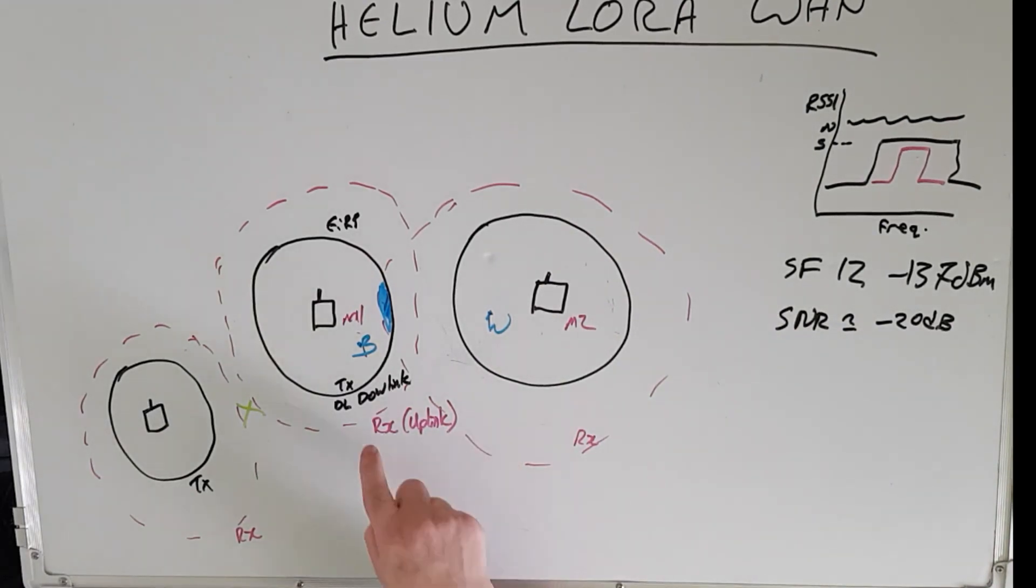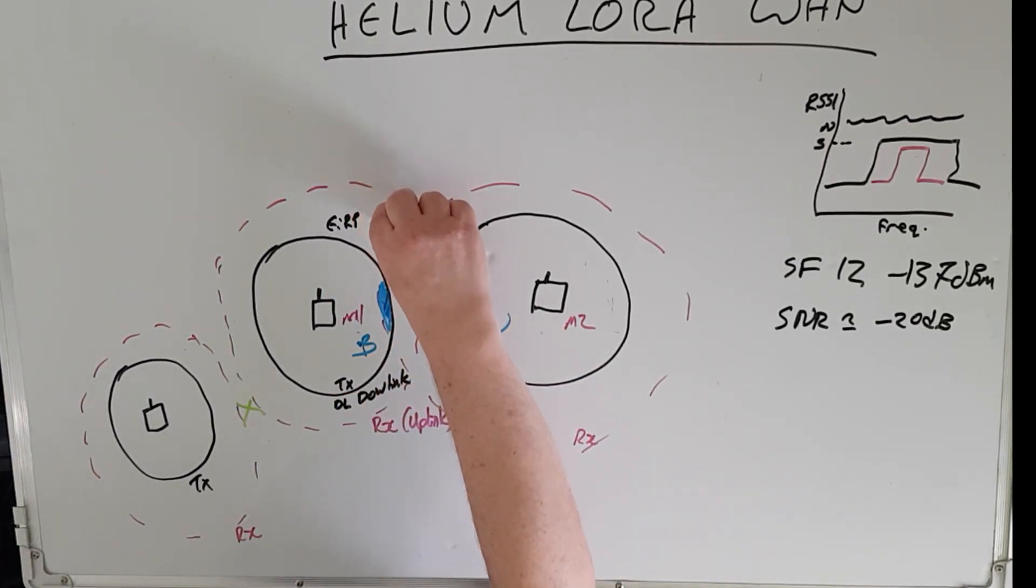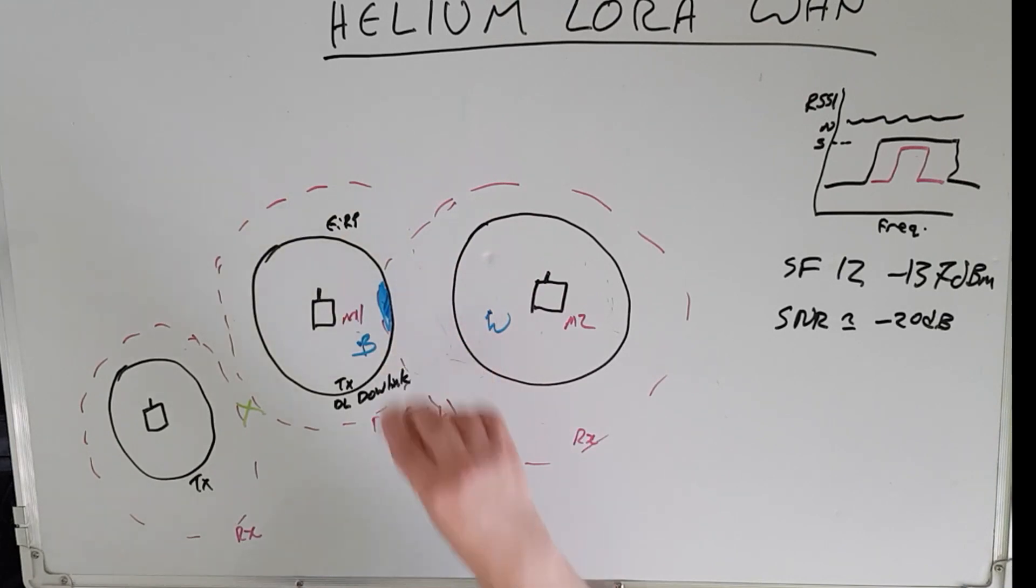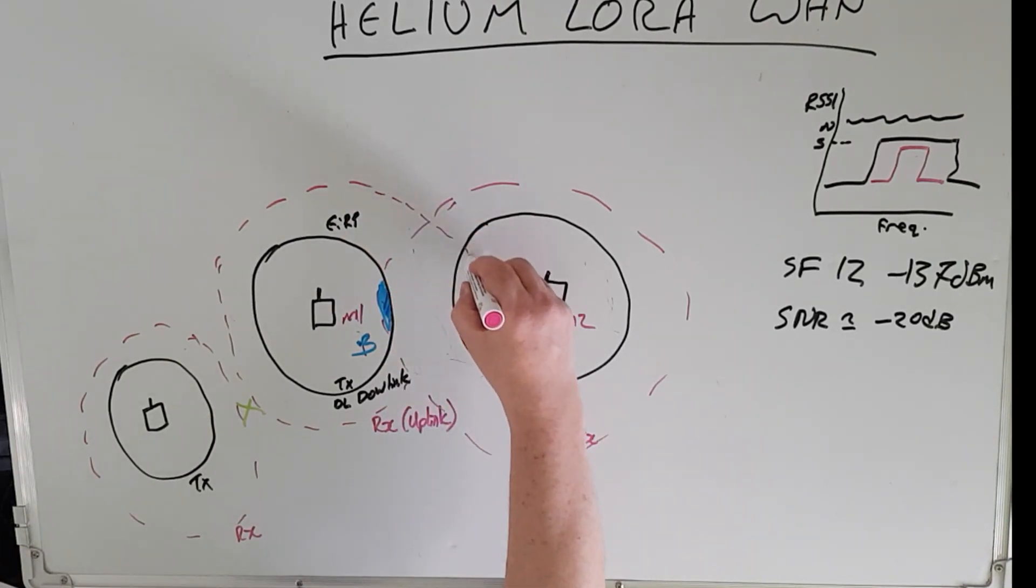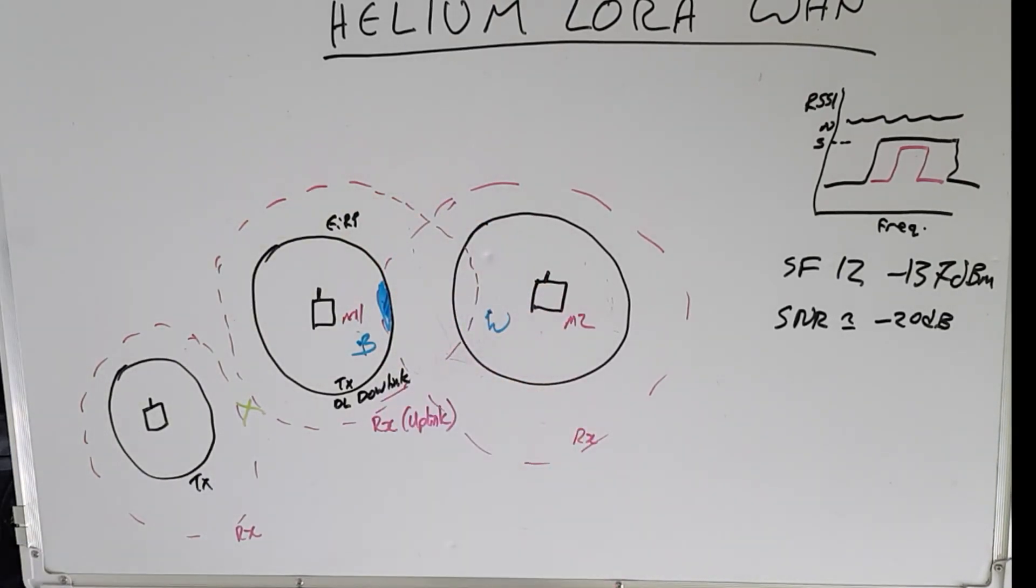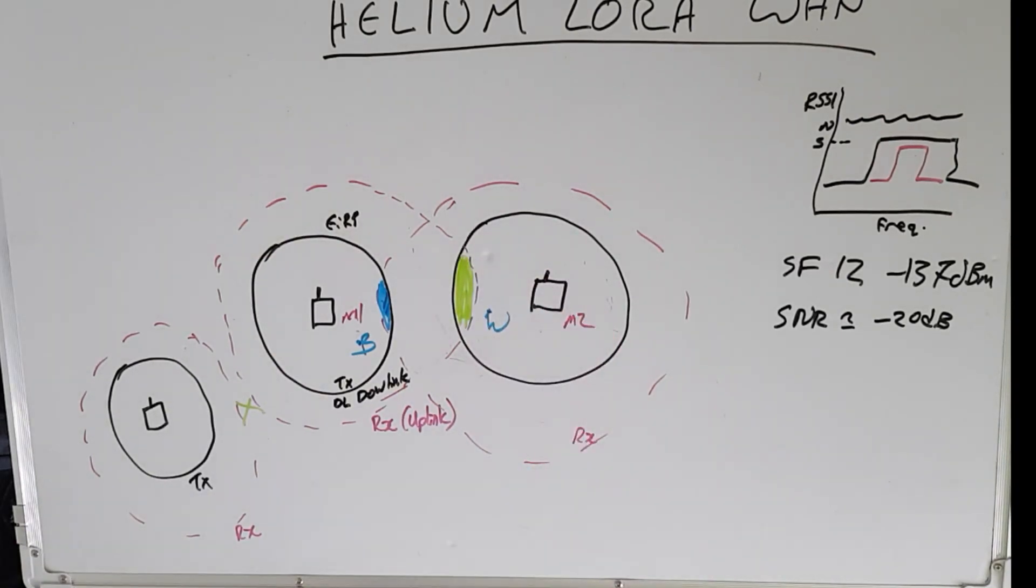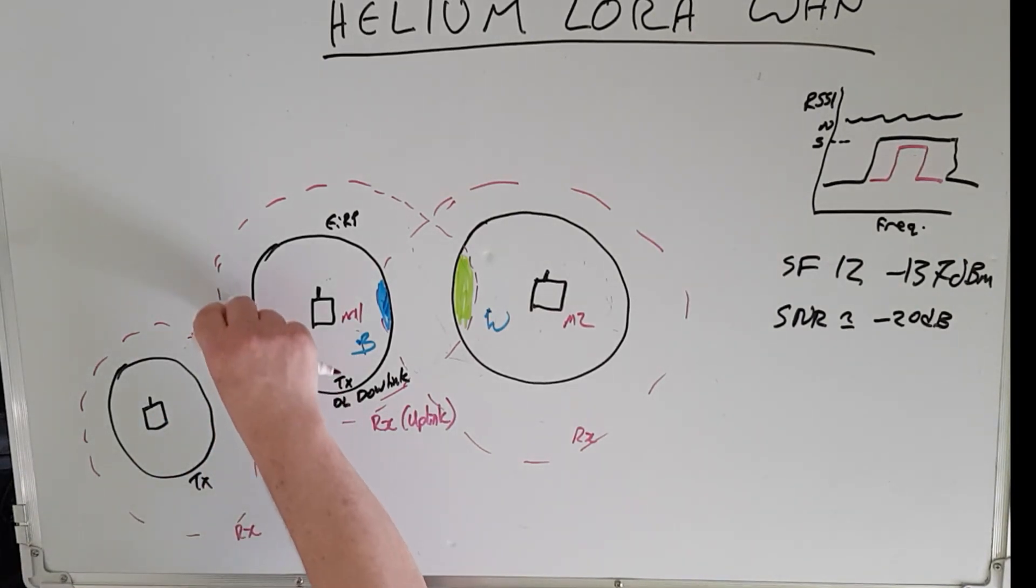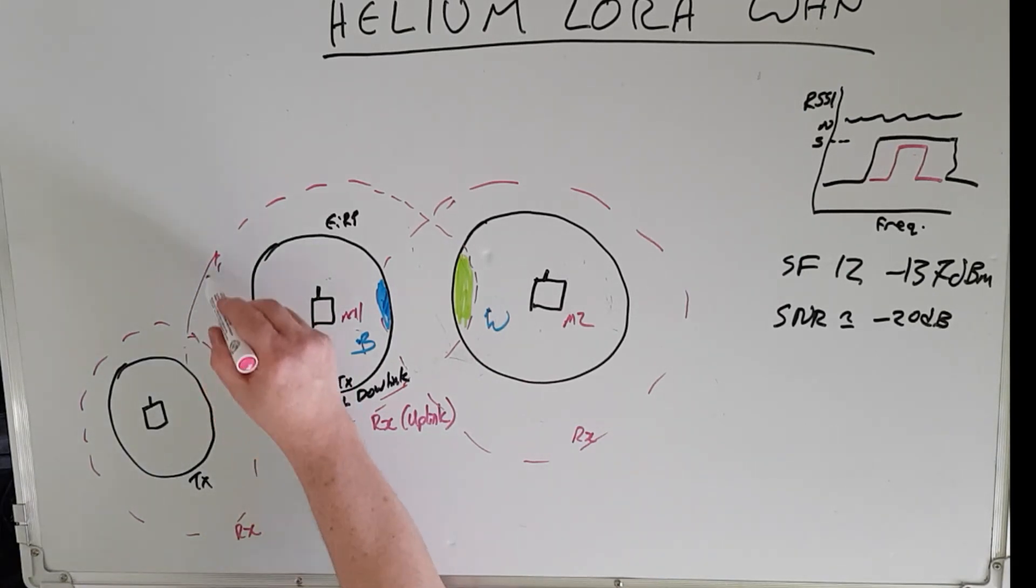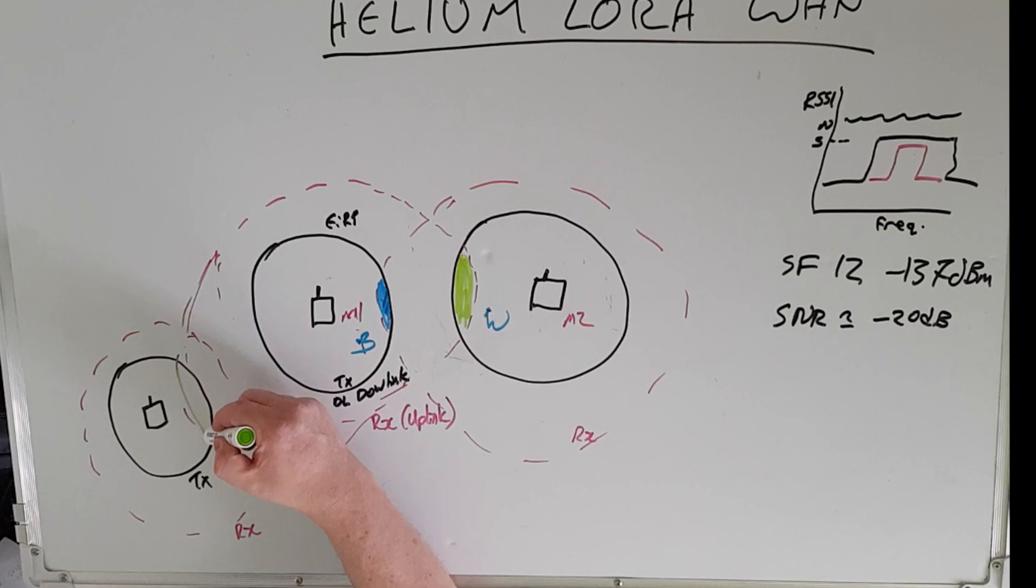So if for example miner number one wants to be a witness to miner number two's beacon, then what we're actually wanting to do is increase the area of this guy's receive coverage such that now there is an overlap. That is, miner number two's beacon is overlapped by miner number one's receive coverage. Likewise for this guy here, miner number three, we want to increase the receive coverage of this guy, miner number one, such that now we have another area of overlap between the beacon and its witness.